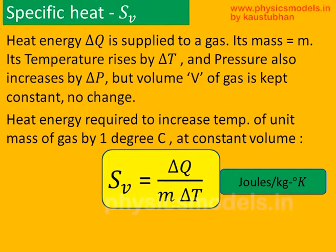So we supply heat energy to a gas of mass m, and its temperature increases by delta T. Specific heat per unit mass is defined as the heat required to increase the temperature of the unit mass of gas by one degree centigrade. So you do delta Q per unit mass m per degree rise in temperature delta T. The units are joules per kg per degree Kelvin.